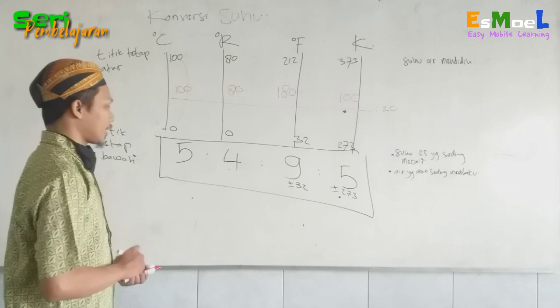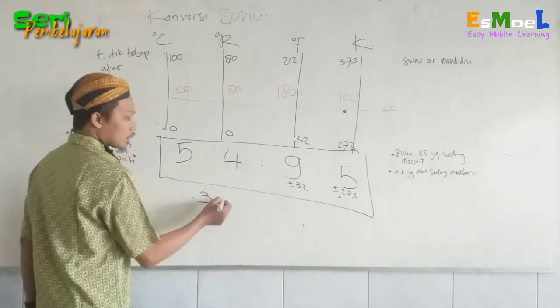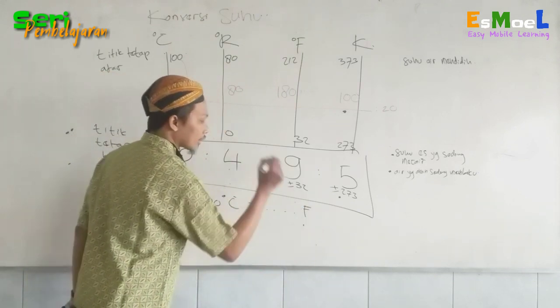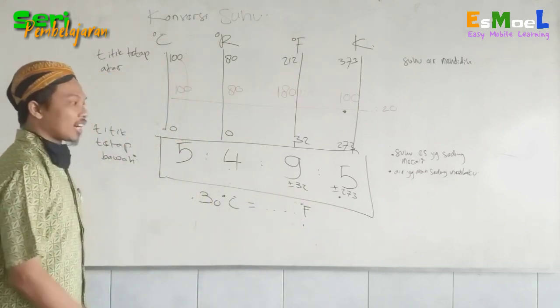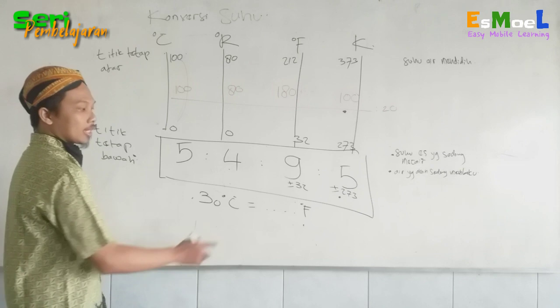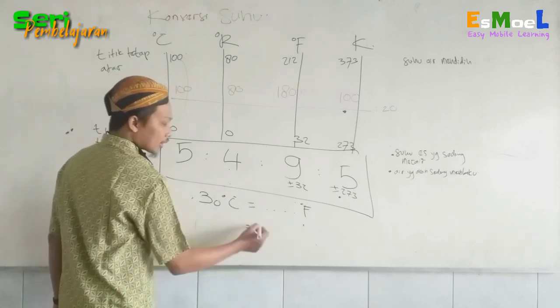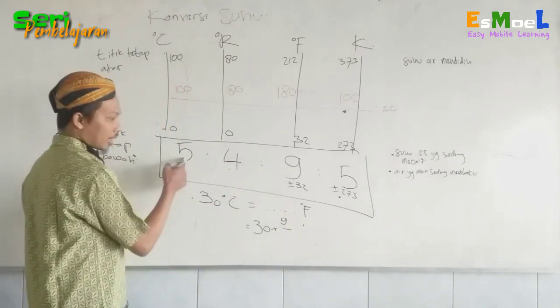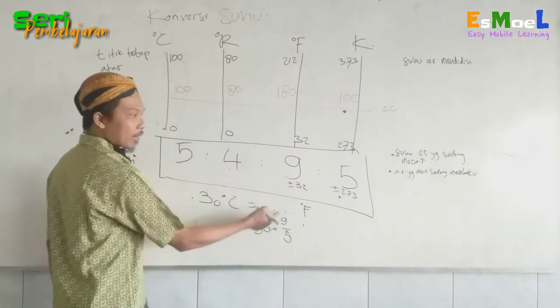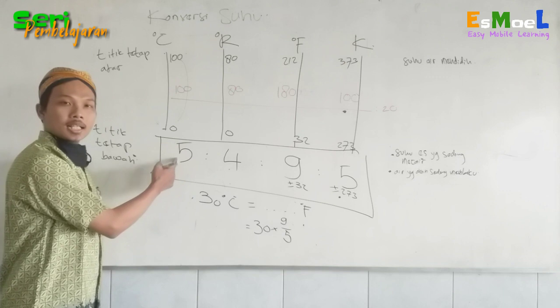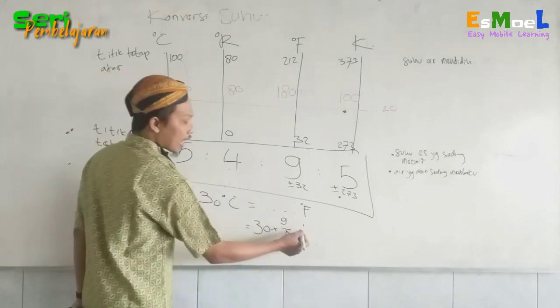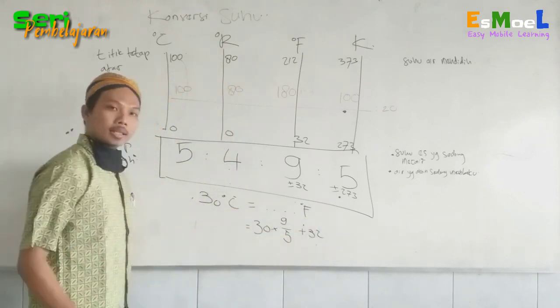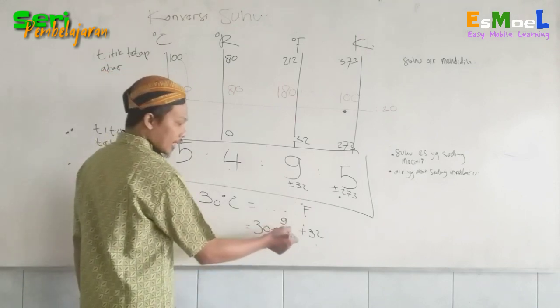Saya contohkan satu soal misalkan di sini. Misalkan 30 derajat Celsius, itu sama dengan titik-titik Fahrenheit. Yang dicari di taruh atas perbandingannya. Tulis di sini berarti sama dengan 30 dikali 9 dibagi 5 dari sini. 9 perbandingannya dari Fahrenheit, 5 perbandingannya dari Celsius. Terus ini terakhir baru ditambah 32.